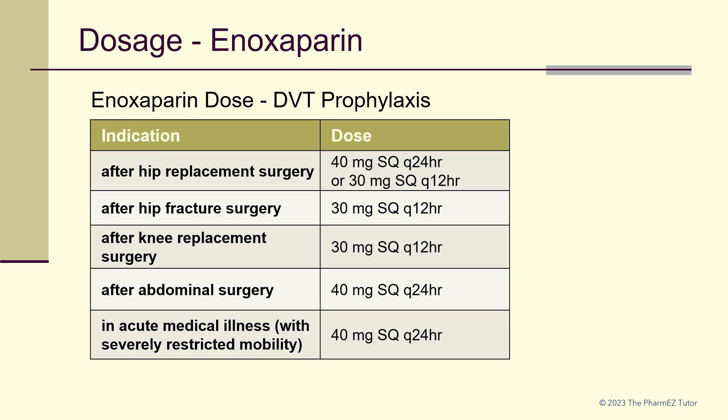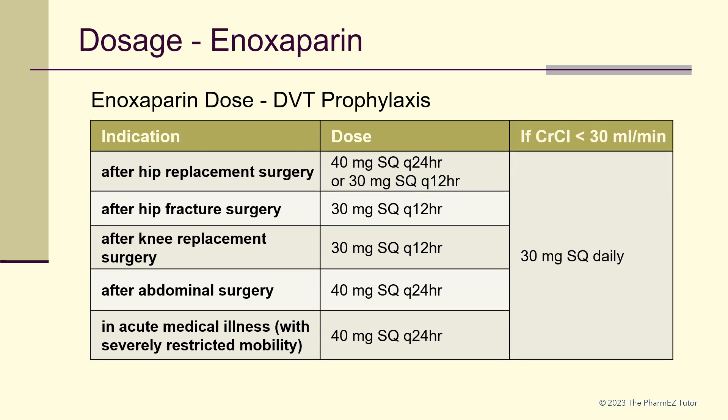What are the dosages for enoxaparin? For DVT prophylaxis, the doses are either 40 mg subcutaneously every 24 hours or 30 mg subcutaneously every 12 hours, depending on the indication. In renal failure — that is, if the creatinine clearance is less than 30 mL per minute — dosages must be reduced to 30 mg subcutaneously daily for all DVT prophylaxis indications.